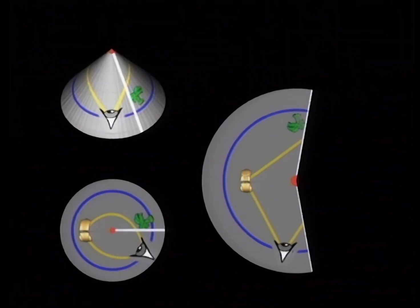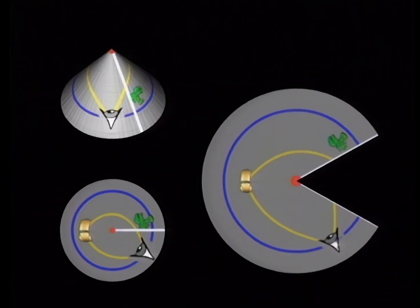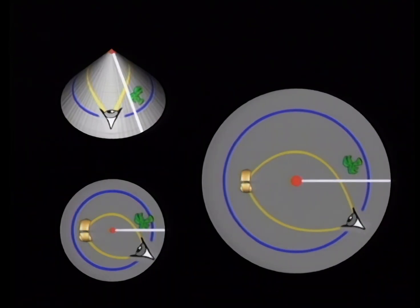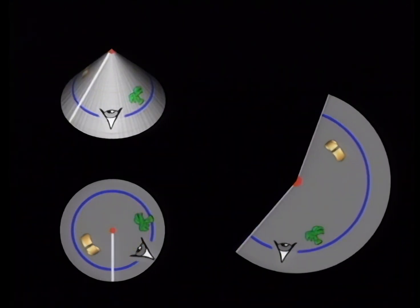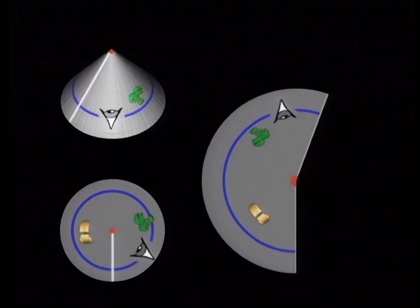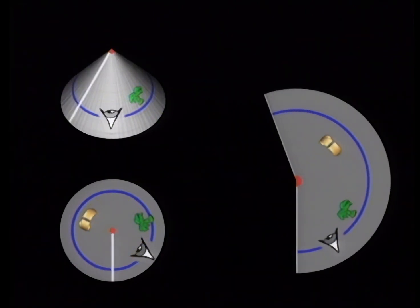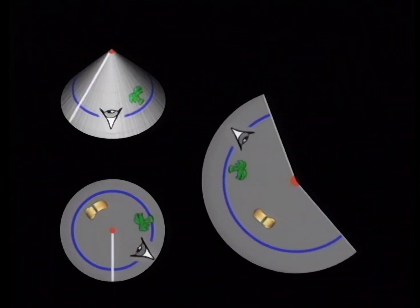Anything crossing one edge reappears at the other. We can mend the cut by stretching and gluing the edges. We get the outsider's view where light rays look curved. The position of the imaginary cut is arbitrary.